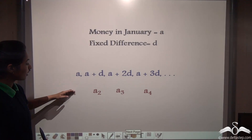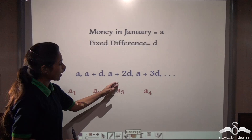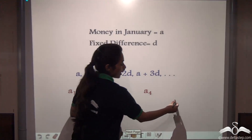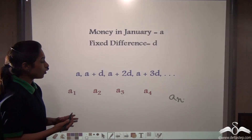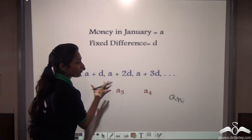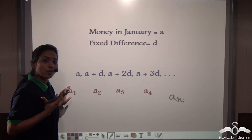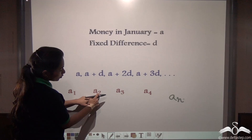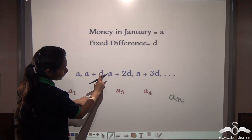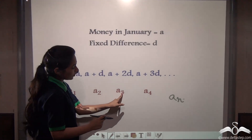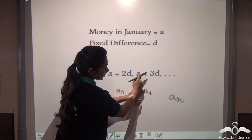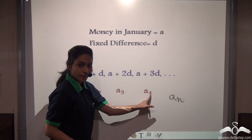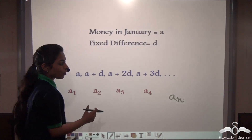Now you have seen that we have listed it as A1, A2, A3, A4, where these are the terms of an AP. So AN represents the nth term of an AP. If A1, A2, A3, A4 can be found out like this, then how will the nth term be found out? You can see that A2 has common difference only D, A3 means 2D, A4 is represented by A plus 3D — so D is actually one less than the term number. This is how we generate the formula for AN.